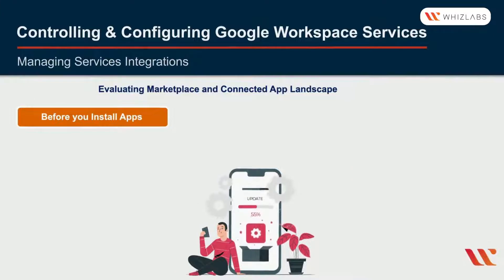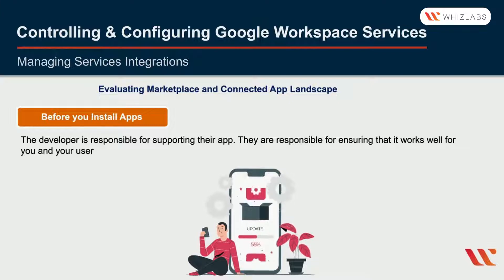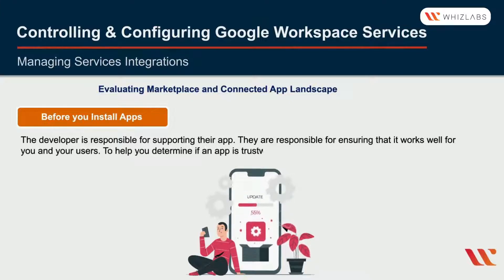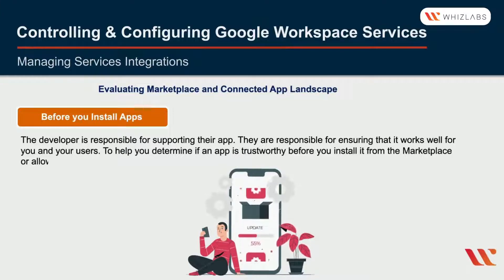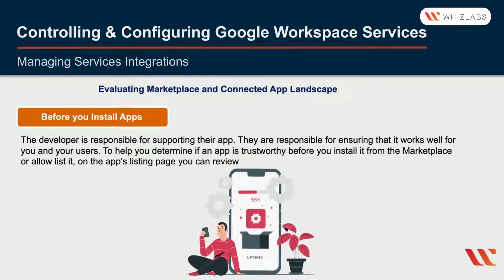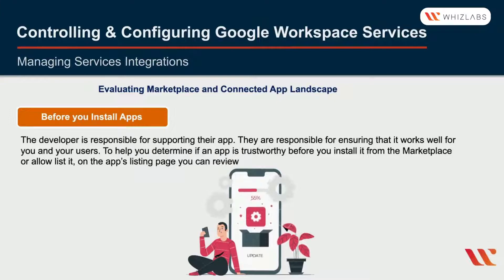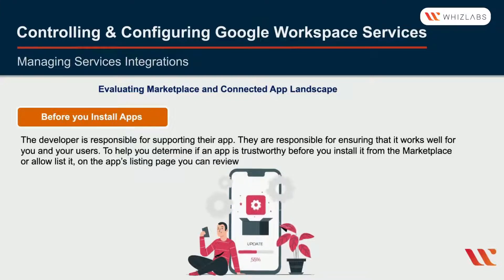Before you install apps, keep in mind that the developer is responsible for supporting the app and ensuring it works well for you and your users. To help determine if an app is trustworthy before installing it from the marketplace or allowing its listing on the apps listing page, you can review: information in the Overview tab about the developer and the app, such as which Google Workspace products it works in, details, and screenshots; the developer's terms of service and privacy policy; and the permissions the app is requesting in the Permissions tab to ensure they meet your organizational policies.